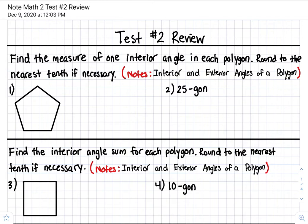So, first one — it says find the measure of one interior angle in each polygon, round to the nearest tenth if necessary. The formula we are going to use is 180 times (n minus 2) divided by n. This formula will allow us to find the measure of one interior angle in each polygon. Remember, n is the number of sides.